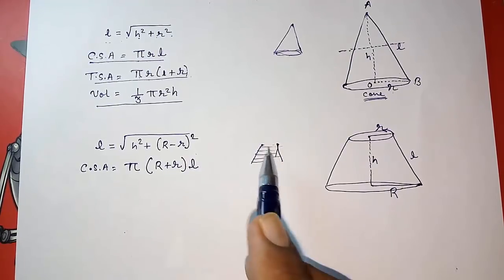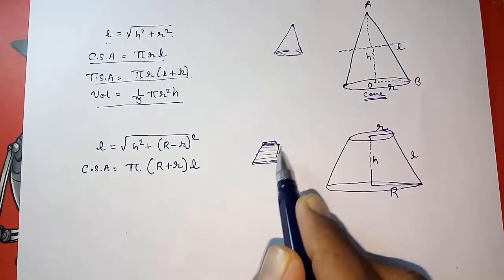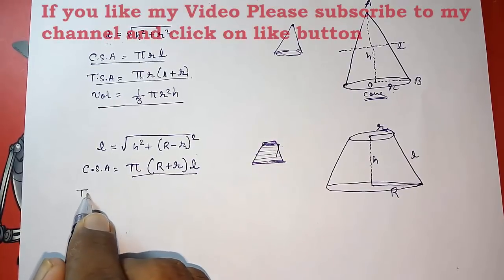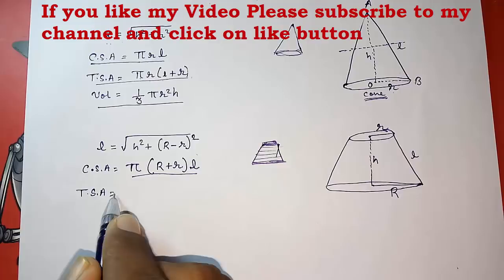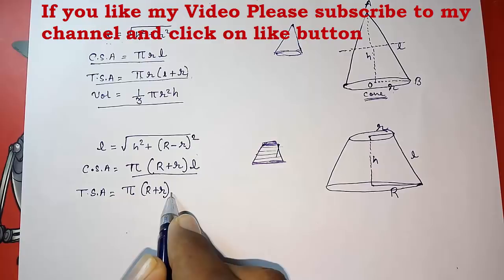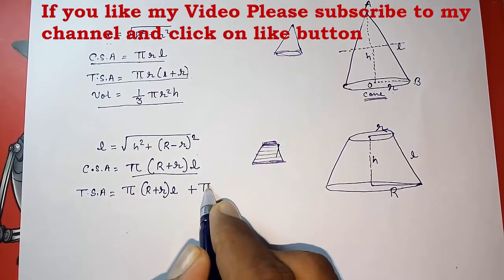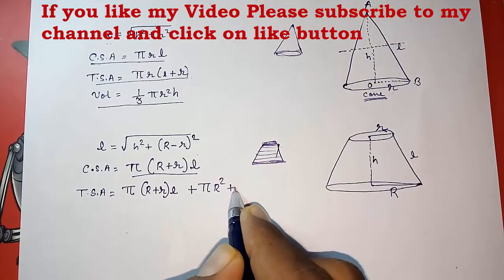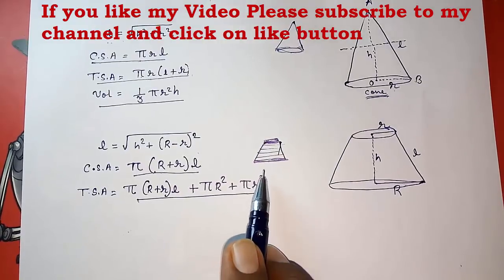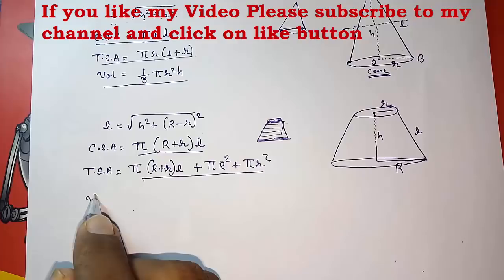Now if we want total surface area, means the upper part also and the lower part from both, at that time we have to use the curved surface area, but then we have to add two circles. So pi capital R plus small r L plus pi capital R square plus pi small r square. This will be the formula for total surface area of frustum of cone.